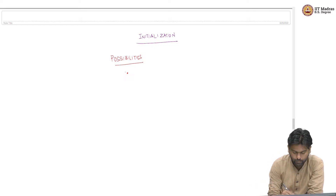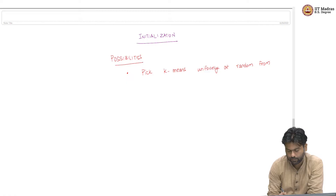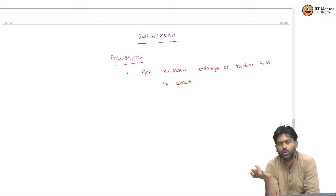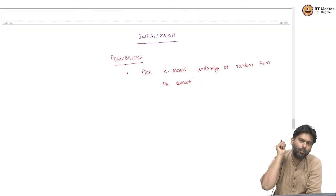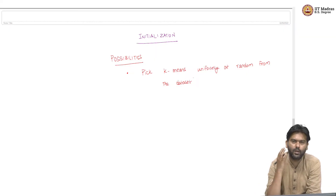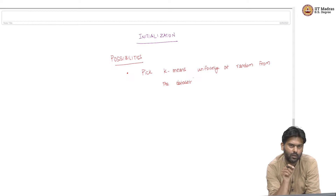This means I am initializing not the z (cluster indicators) but the means themselves. I am initializing which points are going to be the means, and once I fix these as points uniformly picked from the data set, each point will get attracted to its closest mean and go into that box. So one way is to pick k means uniformly at random from the data set. You assign every other point to the closest of these k points, generating an initialization where points are assigned to their nearest mean.